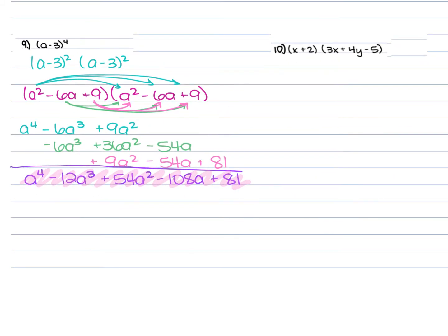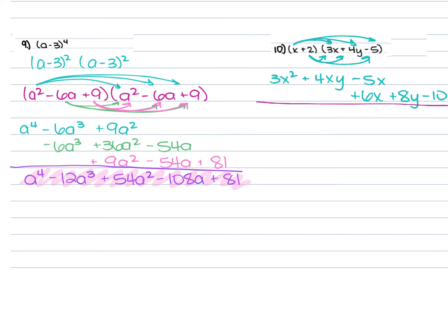For number 10, we have (x + 2)(3x + 4y − 5). Distribute the x: x times 3x is 3x², x times 4y is 4xy, x times negative 5 is negative 5x. Then distribute the 2: 2 times 3x is 6x, 2 times 4y is 8y, 2 times negative 5 is negative 10. Combining like terms: 3x² + 4xy + x + 8y − 10.